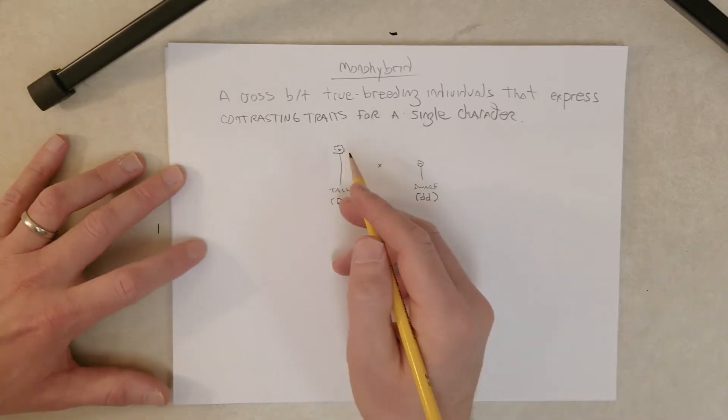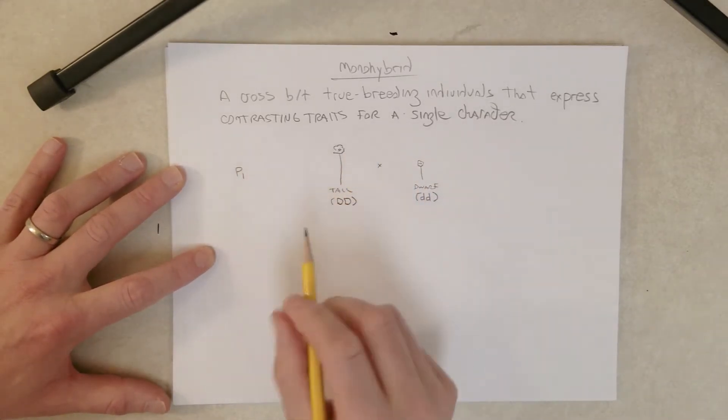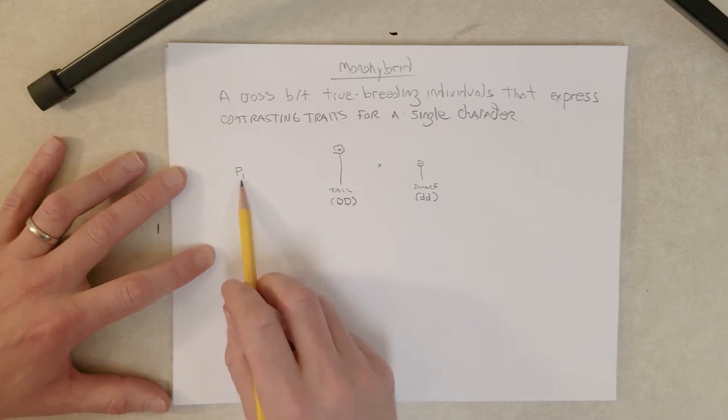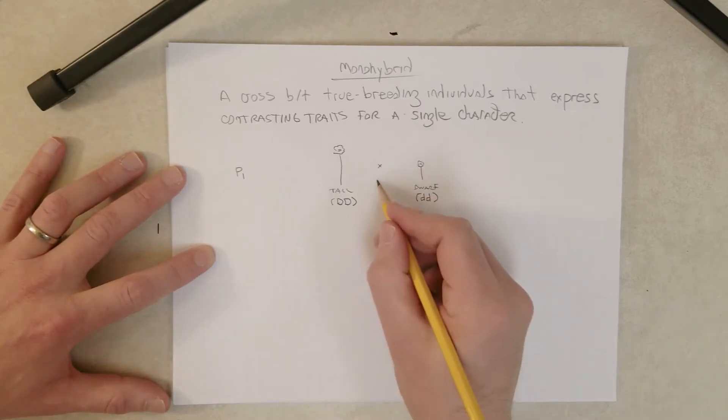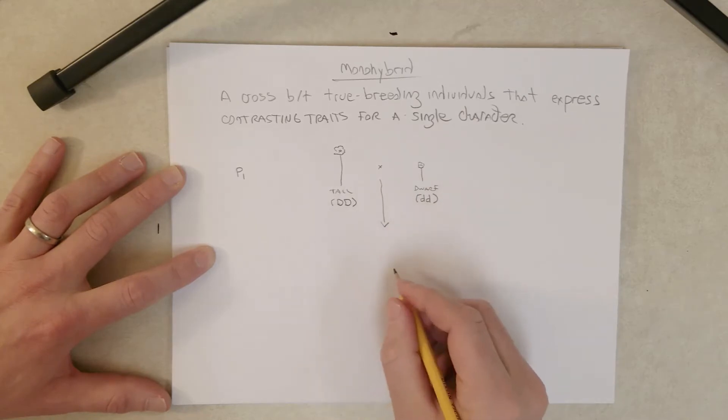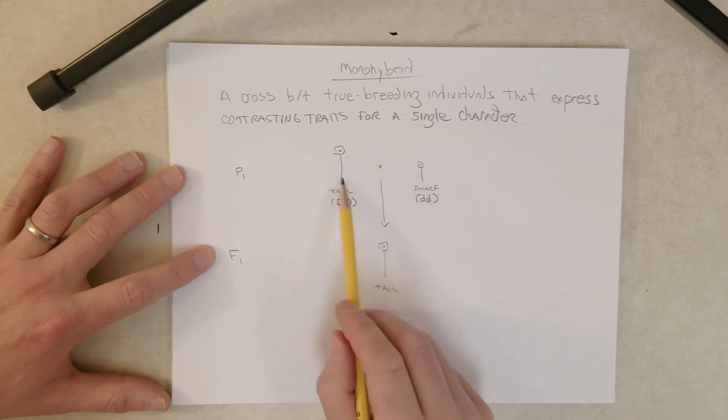So we're going to call this the P1 generation for the parental generation. And when he crossed these, well what did he get? He got all tall offspring. So in a cross between these guys here, pollen and eggs or eggs and pollen, whichever way you want to do it, all of the offspring, the baby plants here, they all grew to be tall plants.